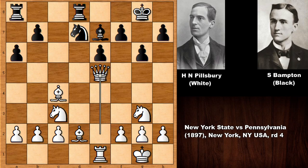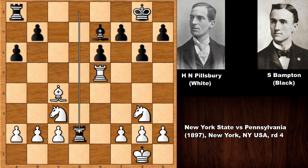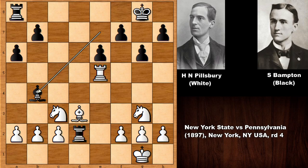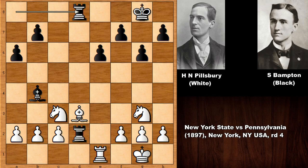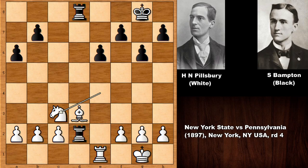The Rook is getting trapped! It is White to move and win. After Pillsbury plays Queen takes E5, Knight takes E5, Rook takes Knight, Rook takes D2 — Pillsbury played Bishop to D3, trapping the Rook, and it is all over. Bampton didn't see this, and it is simply game over. The Rook is in lockdown, there is no defense. Black tries Bishop to B4, but then the precise move Rook to E1, with Knight to E4 or Knight to F1 coming to win the Rook.